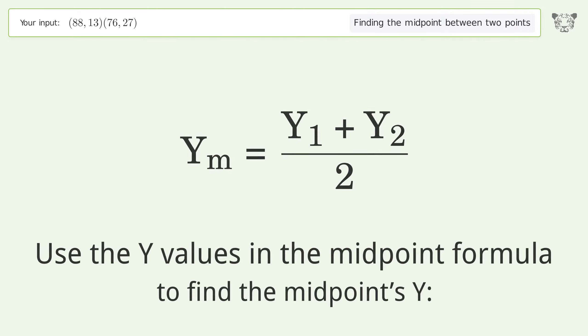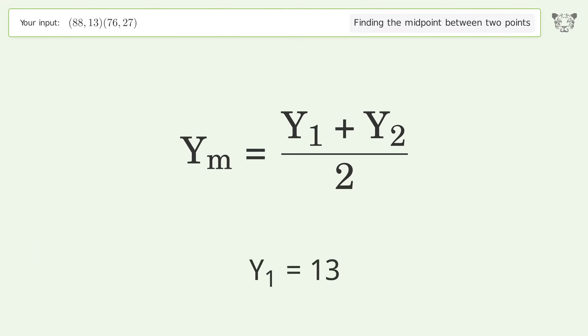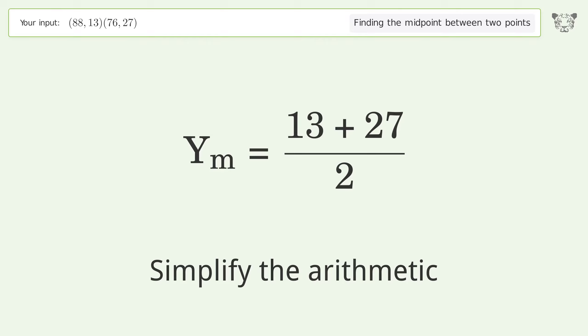Use the Y values in the midpoint formula to find the midpoint's Y. Y1 equals 13, Y2 equals 27. Simplify the arithmetic.